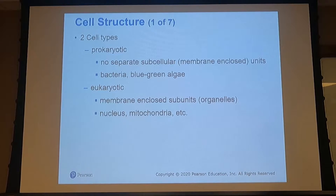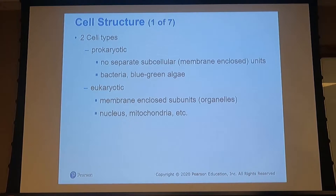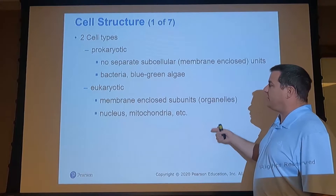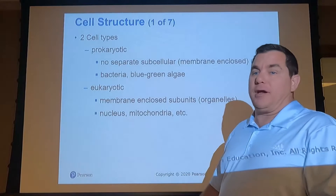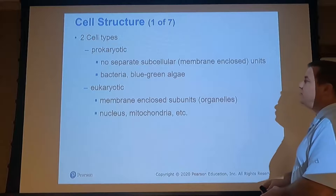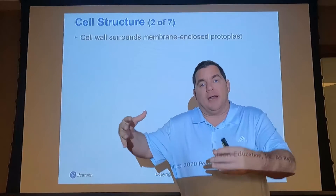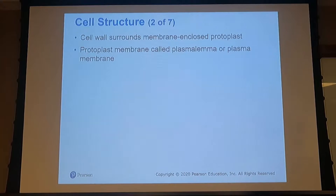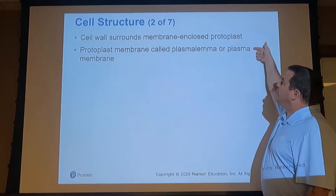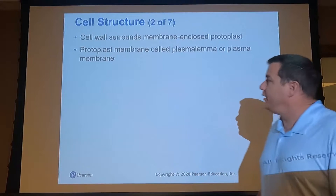We have two cell types: prokaryotic, which are single-celled — typically our bacteria — and eukaryotic, which are multi-celled. We are eukaryotic organisms; plants are eukaryotic organisms. Eukaryotic cells form organelles and have different components, including a cell wall that surrounds everything and keeps the cell's contents structured. We also have the plasma membrane — also called the plasmalemma — which are interchangeable terms.